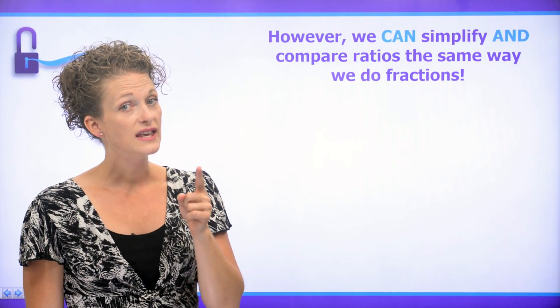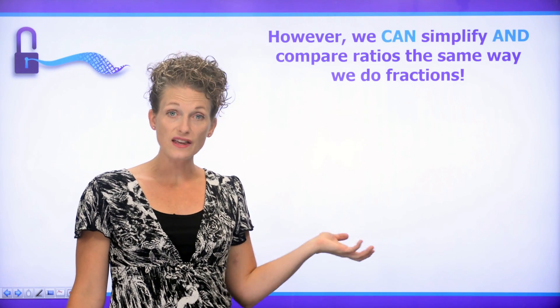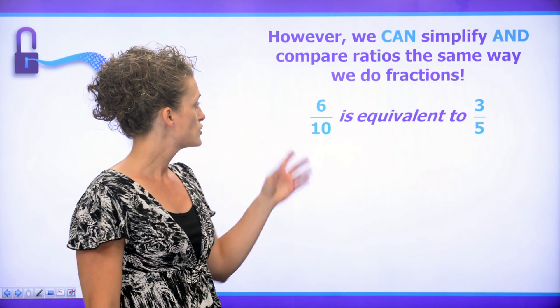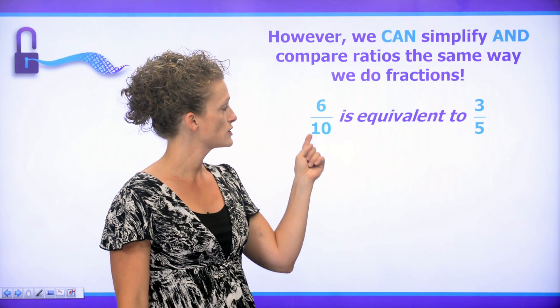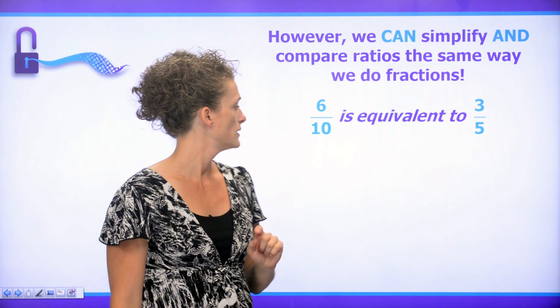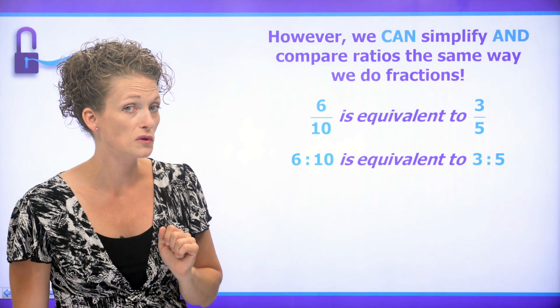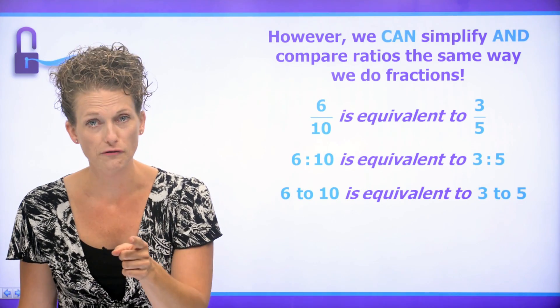However, we can simplify and compare ratios the same way that we do with fractions. So 6 over 10 is equivalent to 3 over 5, because 6 over 10, if we simplify that, we get 3 over 5. 6 colon 10 is equivalent to 3 colon 5, and 6 to 10 is equivalent to 3 to 5.